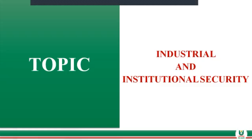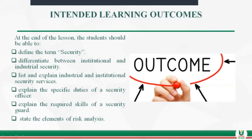Before we move on to the actual discussion, let's look at the intended learning outcomes. At the end of the lesson, you should be able to define the term security, differentiate between institutional and industrial security, explain industrial and institutional security services, explain the specific duties of a security officer, as well as the required skills of a security guard, and finally state the elements of risk analysis.